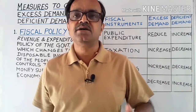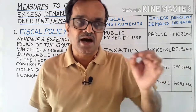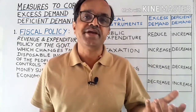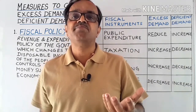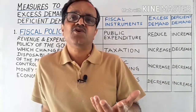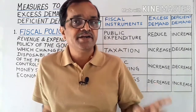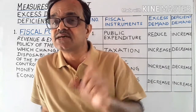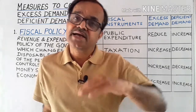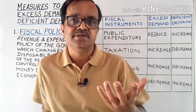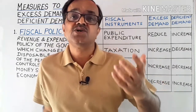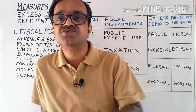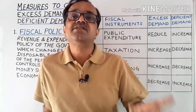Hello students, I am Sandeep Kumar Sinha. Welcome back to my channel. Today I will discuss the measures to correct the situations of excess demand and deficient demand in the economy. The main cause behind these two situations is the increase or decrease in planned expenditure, that is aggregate demand, in comparison to the total planned output, that is aggregate supply, at the point of full employment. Aggregate demand has to be increased during deficient demand and reduced during excess demand.